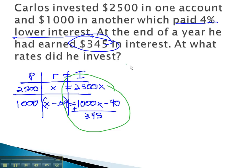Again, this last column becomes our equation. 2,500x plus 1,000x minus 40 equals 345.